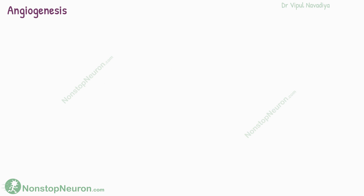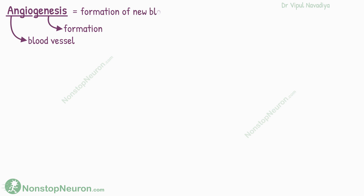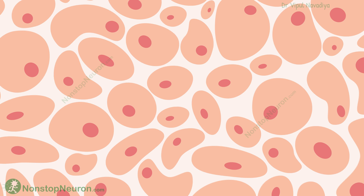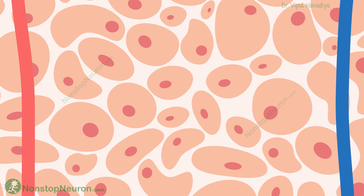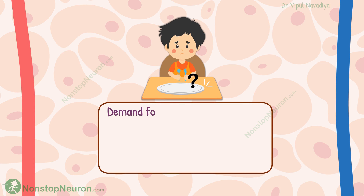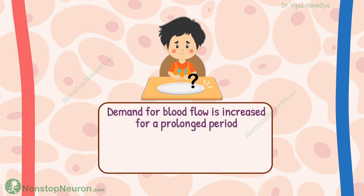First, let's talk about angiogenesis. Angio means blood vessel and genesis means formation, so angiogenesis literally means the formation of new blood vessels. To study this, let's take some tissue along with its vascular supply. Angiogenesis occurs when the demand for blood flow is increased for a prolonged period — in other words, the cells stay hungry for days to weeks.